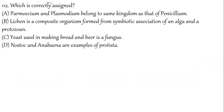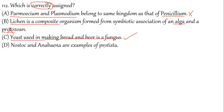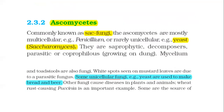Question 112: Which is correctly assigned? Paramecium and Plasmodium belong to the same kingdom as Penicillin — no, Penicillin is a fungus while Paramecium and Plasmodium are protozoans. Lichen is a symbiotic association of algae and fungi — not protozoa. Yeast used in making bread and beer is a fungus — correct. Nostoc and Anabaena are examples of Monera — correct. The correct answer is option C: unicellular fungi like yeast (Saccharomyces, which is Ascomycetes) are used to make bread and beer.